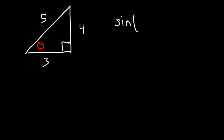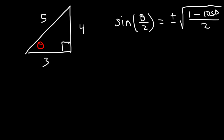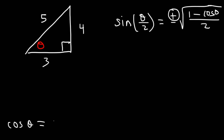Given a right triangle with angle theta and sides 3, 4, and 5, find the value of sine(θ/2). The formula is plus or minus the square root of (1 minus cosine θ) divided by 2. Since x and y are both positive, the triangle is in quadrant 1, so sine is positive. We need cosine θ, which equals the adjacent side divided by the hypotenuse: cosine θ = 3/5.